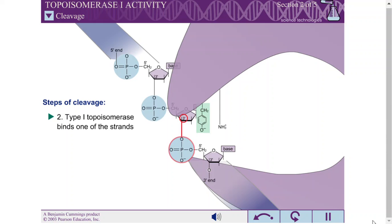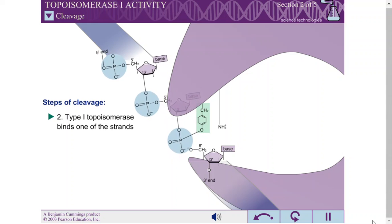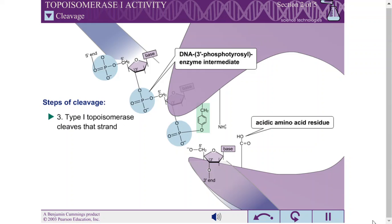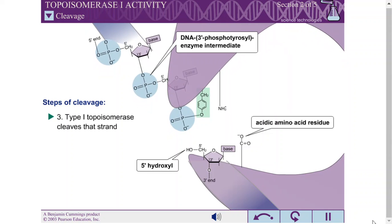The oxyanion attacks the phosphate group at the 3' position of the nearest deoxyribose, producing a DNA 3' phosphotyrosyl enzyme intermediate and a 5' hydroxyl polynucleotide. The hydrogen atom on the 5' hydroxyl is probably donated by a nearby acidic amino acid residue.